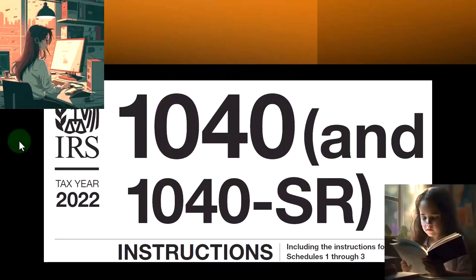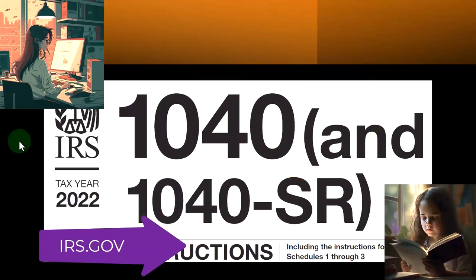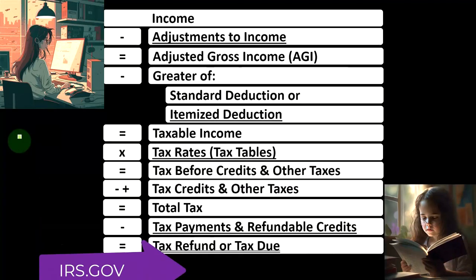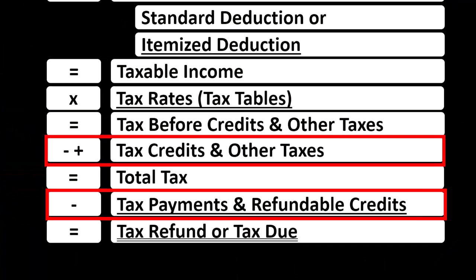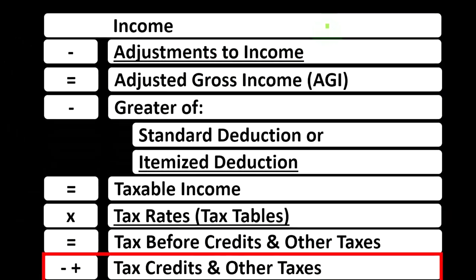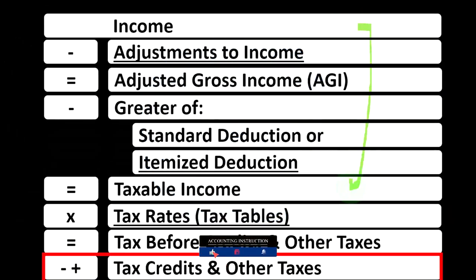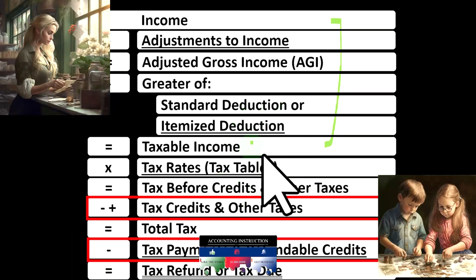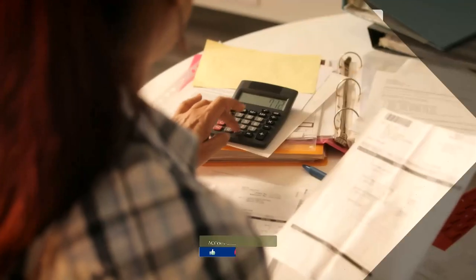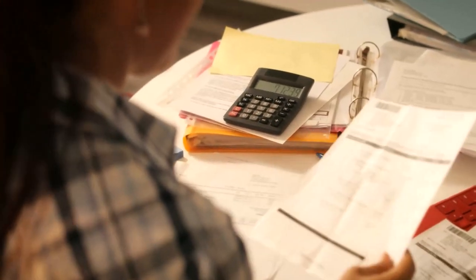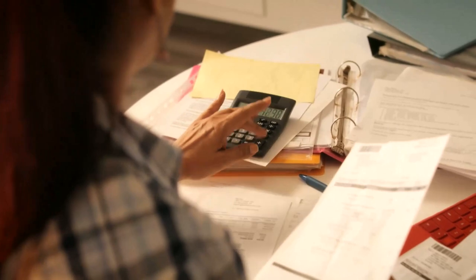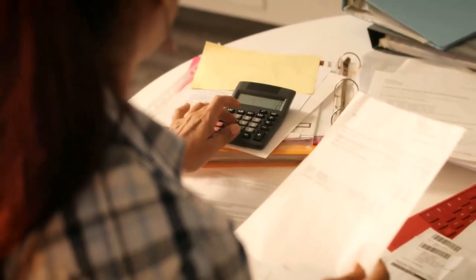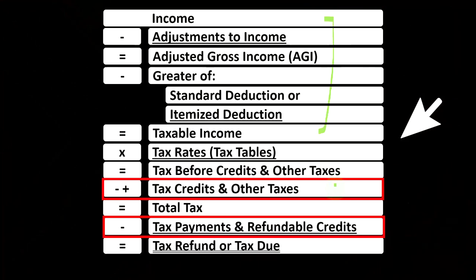Most of this information can be found in the Form 1040 instructions for tax year 2022 on the IRS website, irs.gov. Looking at the income tax formula, we're at the bottom half in the credit section. The first half of the income tax formula is essentially an income statement, ending at taxable income — similar to net income on an income statement. We then calculate the tax on that using a progressive tax structure to get to the tax before credits and other taxes.